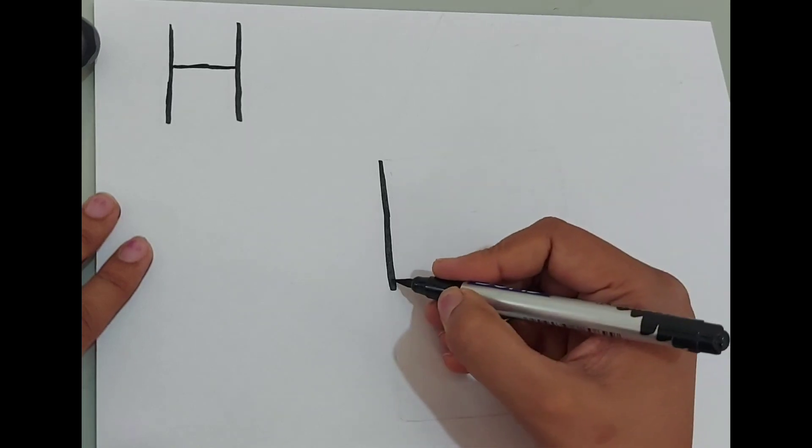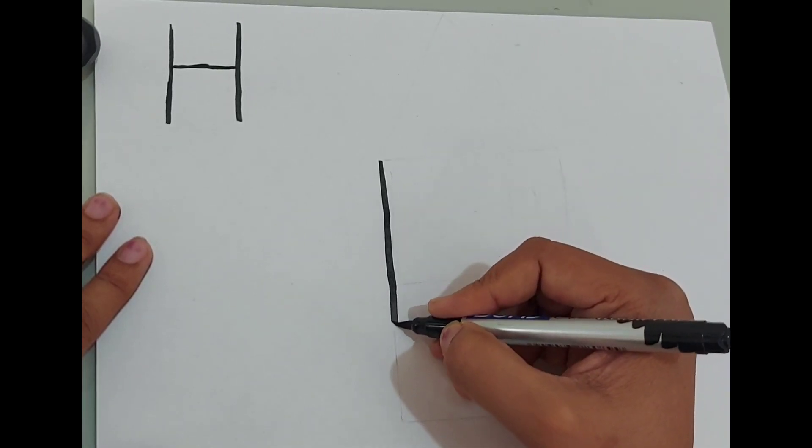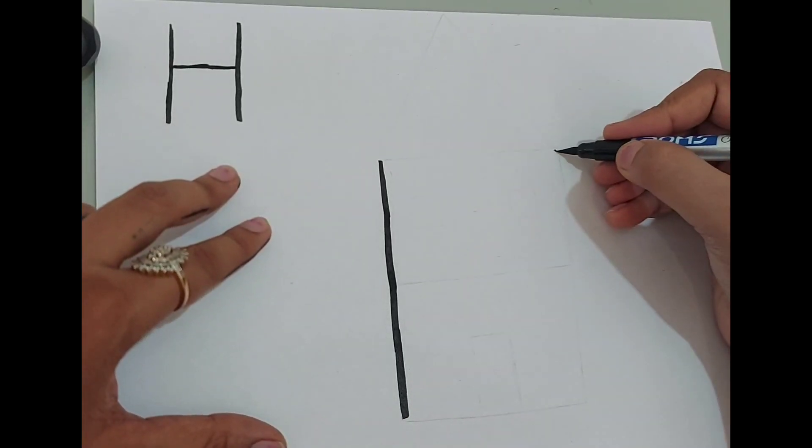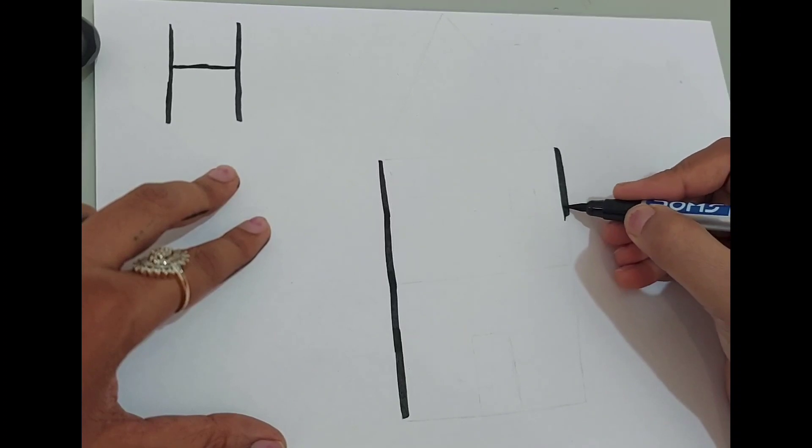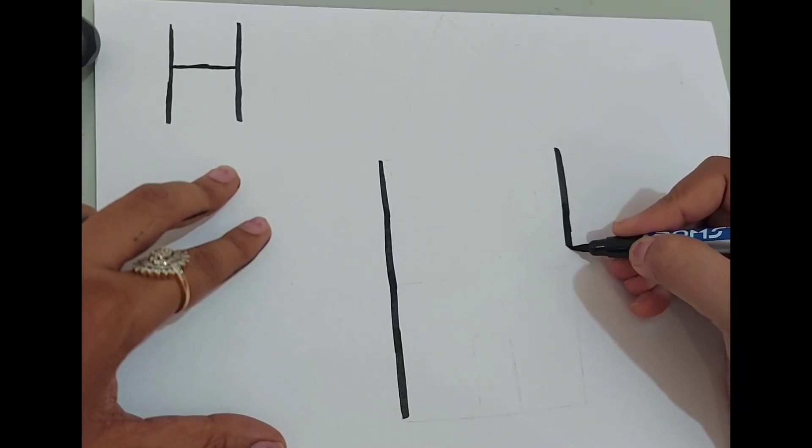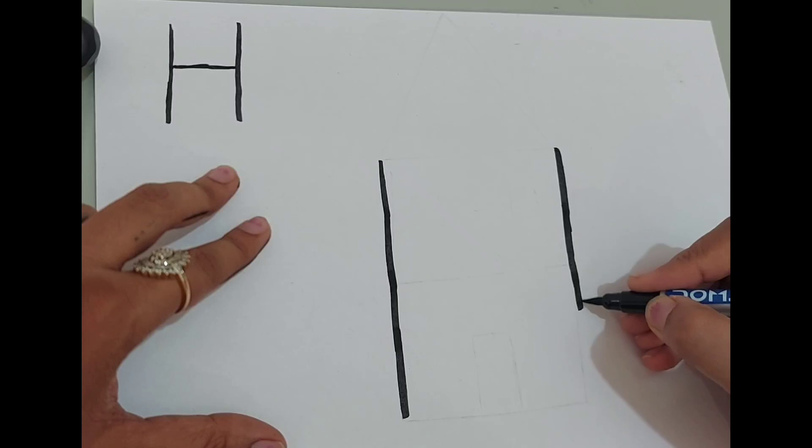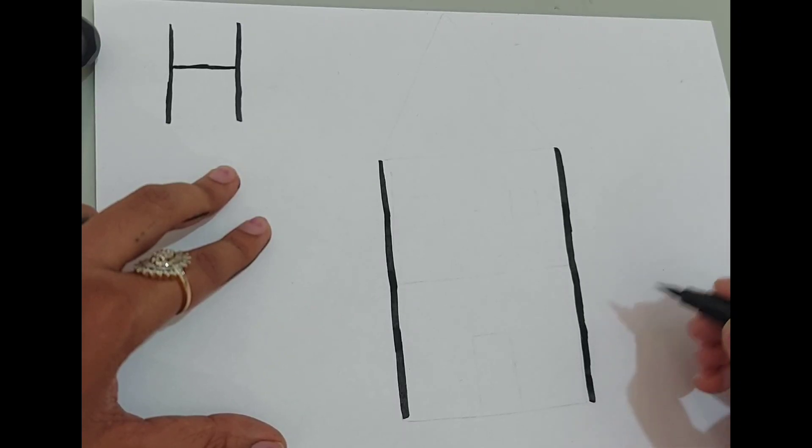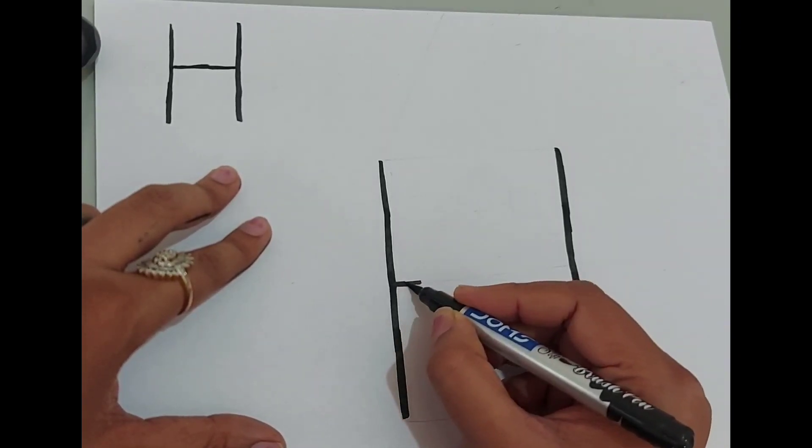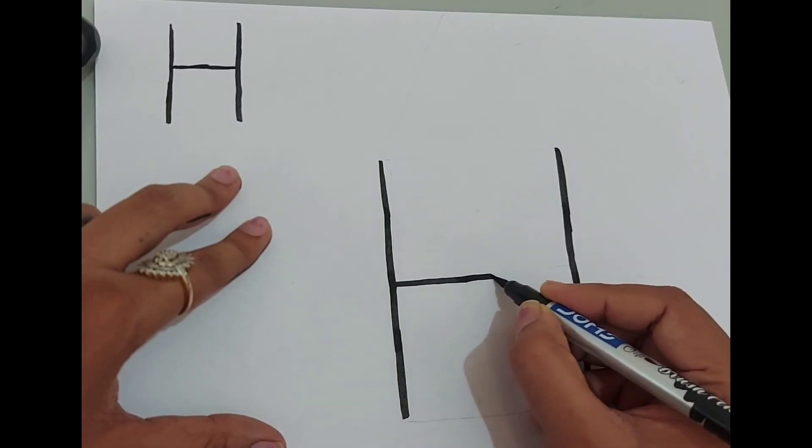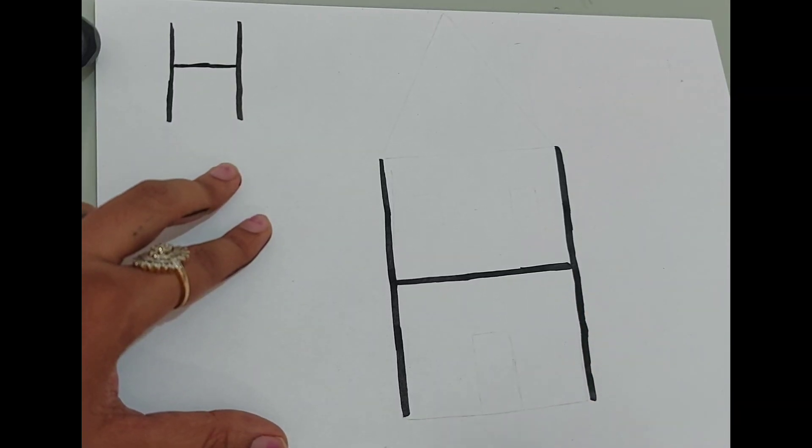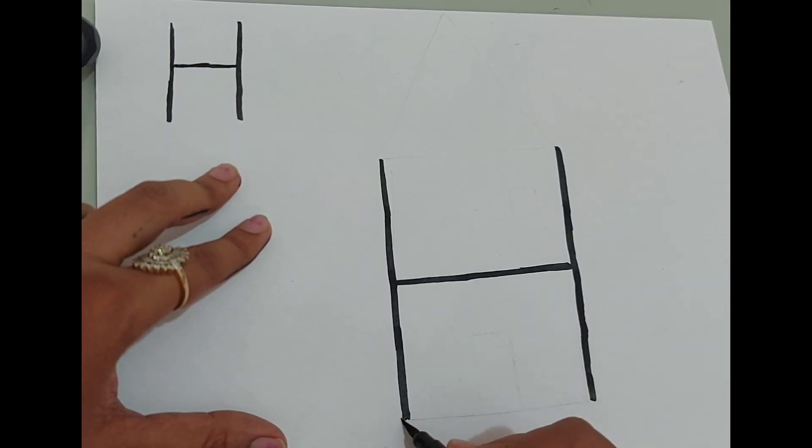Draw a straight line, and draw another straight line. Okay, then join them together. So here is our alphabet H. Now we'll draw a house. Join them from the bottom.